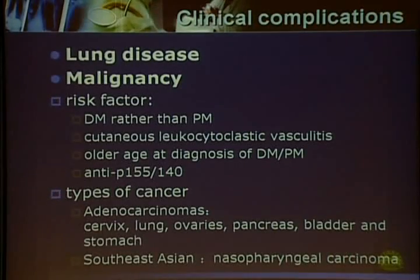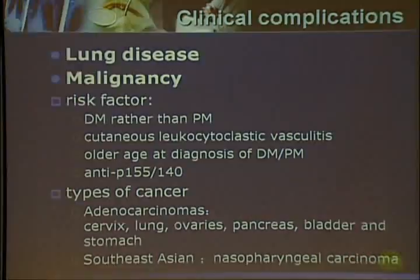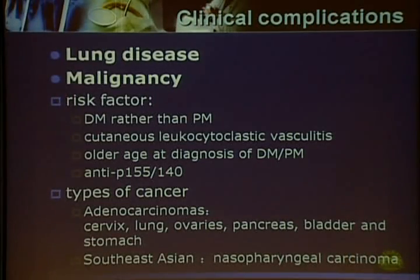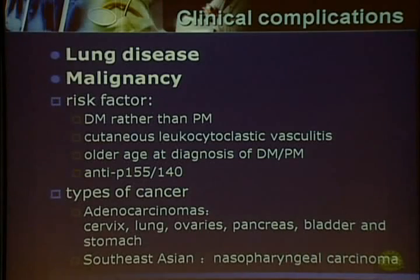Some extra-muscular complications, like lung disease and malignancies, often predict a worse prognosis. Dermatomyositis has a worse prognosis than polymyositis. Regarding association with malignancies, dermatomyositis has a higher association with malignancies.